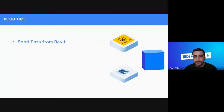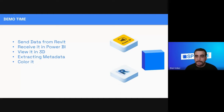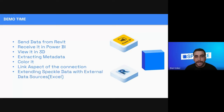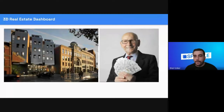Here's what we are going to do: first, we will send our model from Revit to Speckle and then receive it in Power BI. In Power BI we'll view the model in 3D within the Power BI environment, then extract some metadata and properties from what we sent from Revit. We'll use the coloring functionality of the 3D viewer visual to color our model in 3D, highlight the live link aspect, make changes on the Revit end, and see them reflected in Power BI. Finally, we'll extend the received Speckle data with an external data source — Revit data combined with an Excel table — and create a relationship between those two data sources in Power BI.